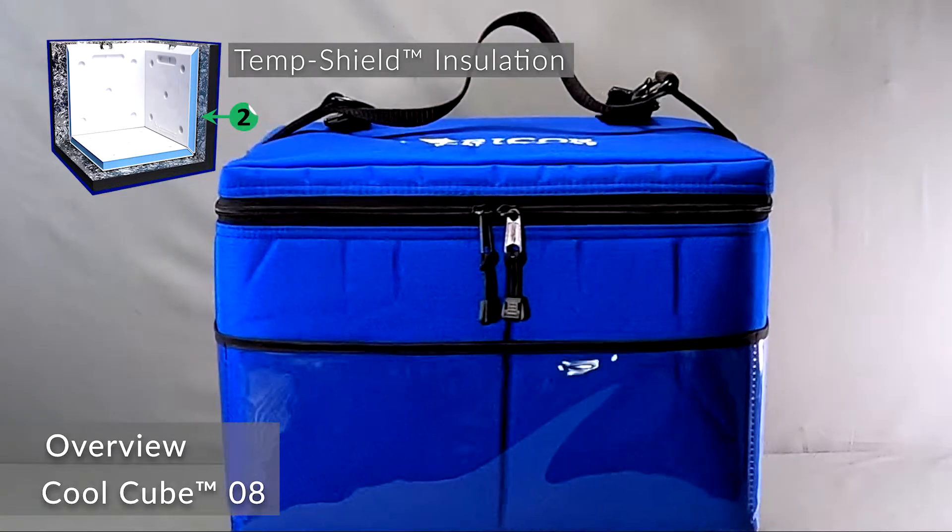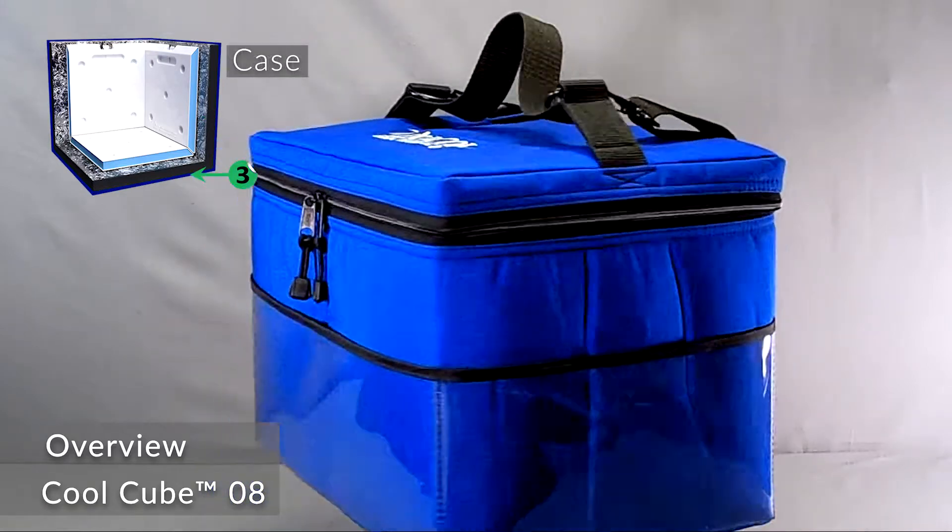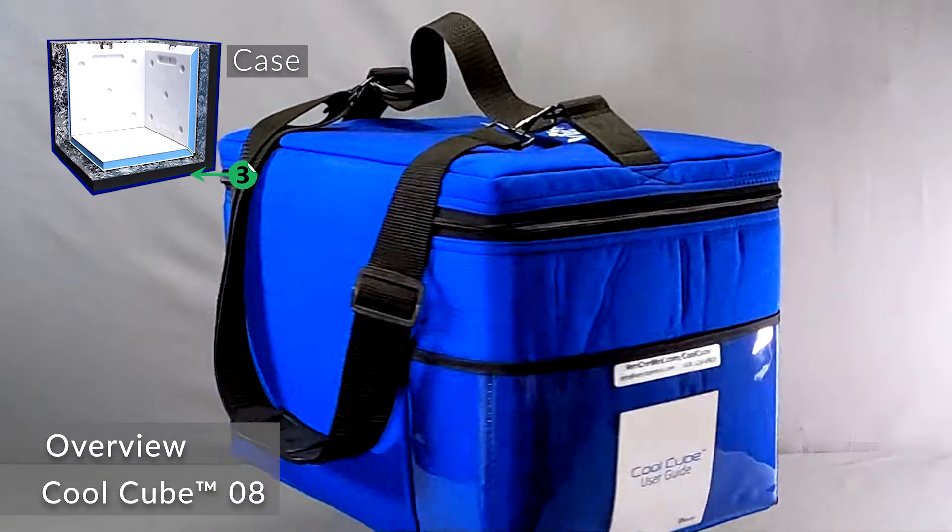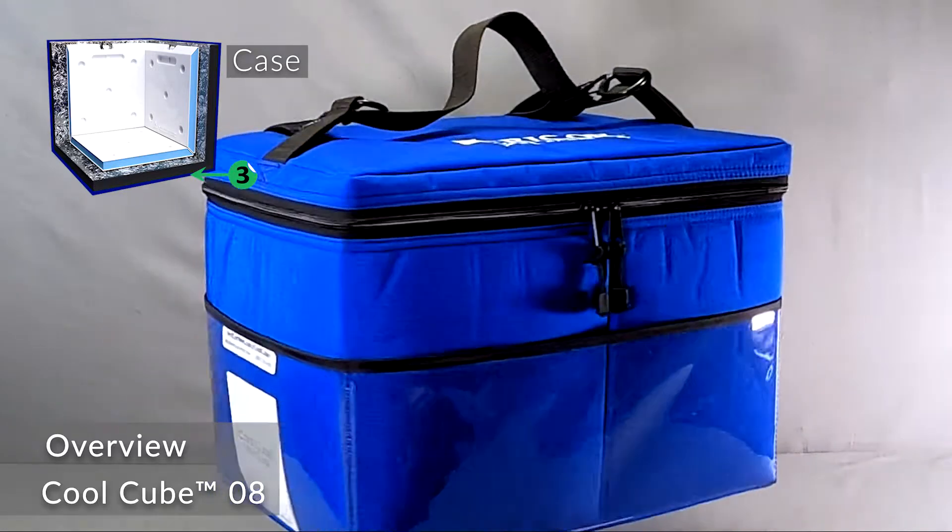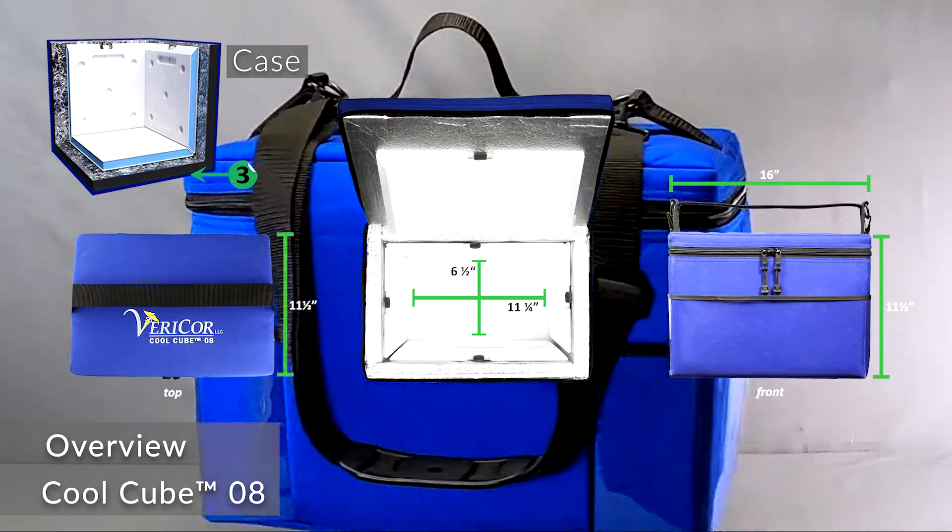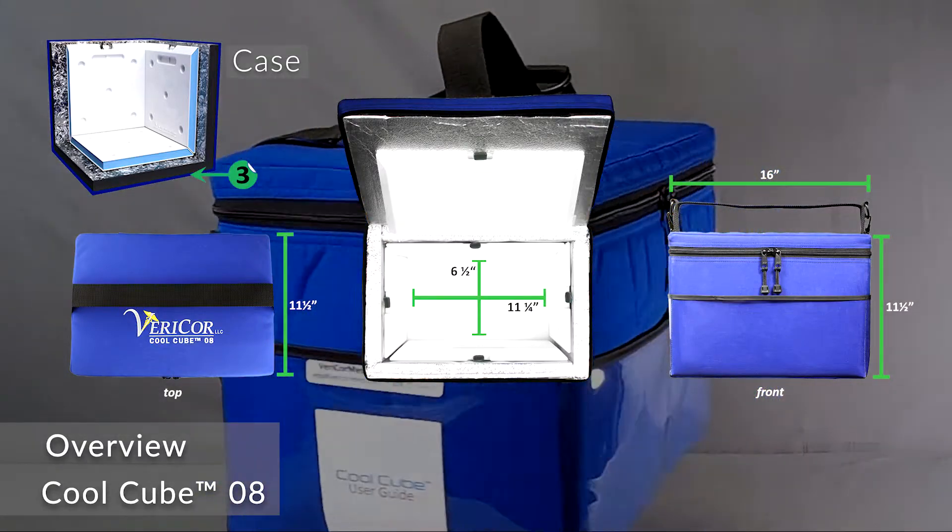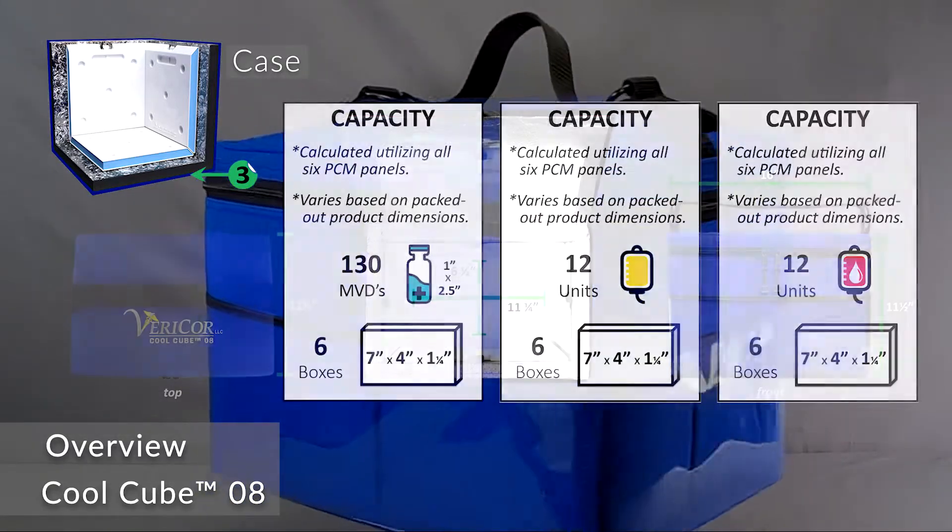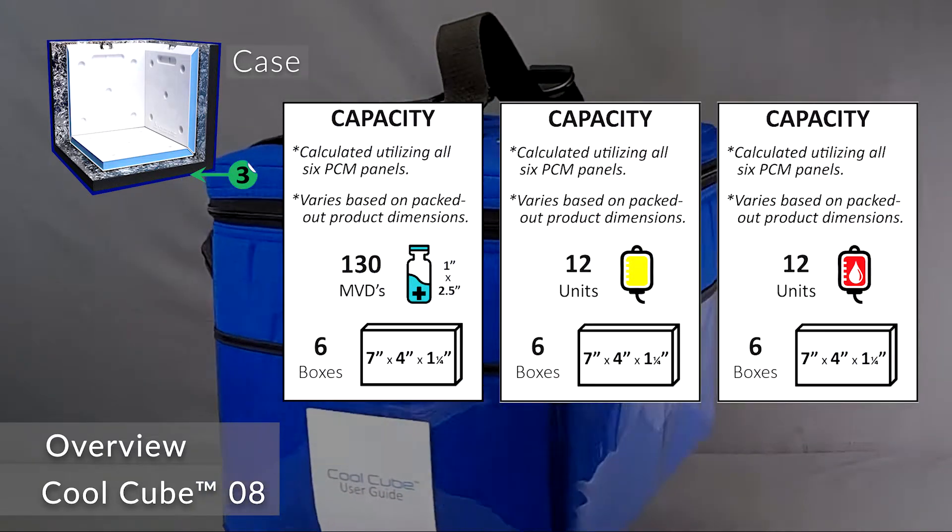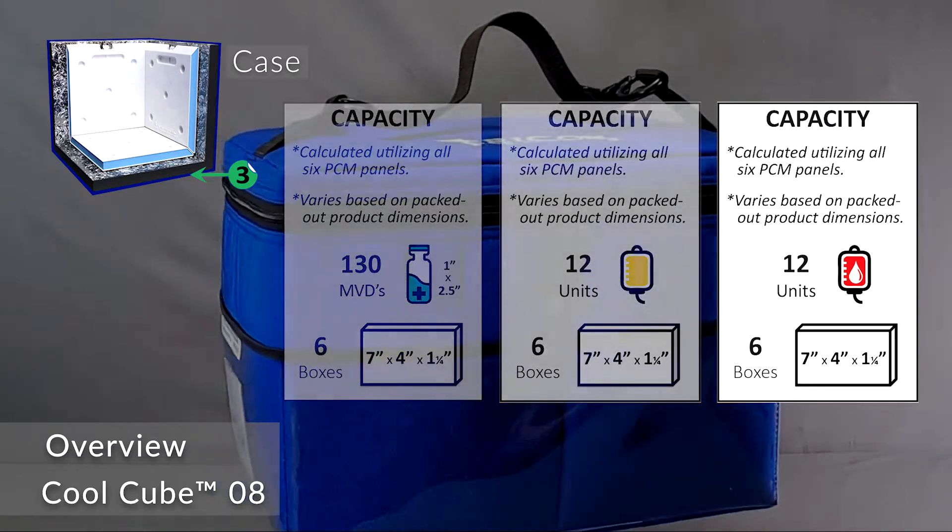The CoolCube 08 is very mobile and is ideal for small to medium quantities. Inside, the capacity is approximately 8 liters, with a packout space of 11 and a quarter by 6 and a half by 6 and a half. The CoolCube 08 weighs between 16 and 20 pounds, depending on the PCM panels being used.